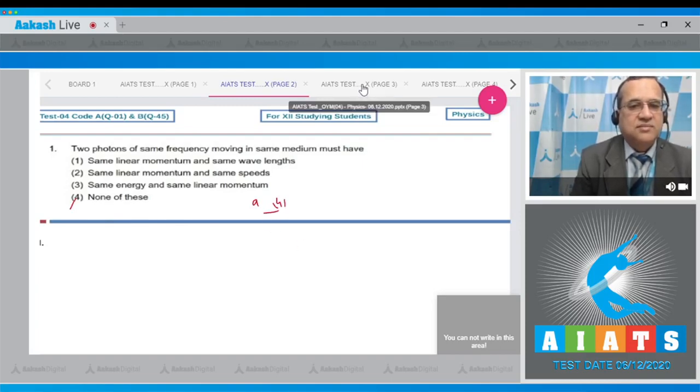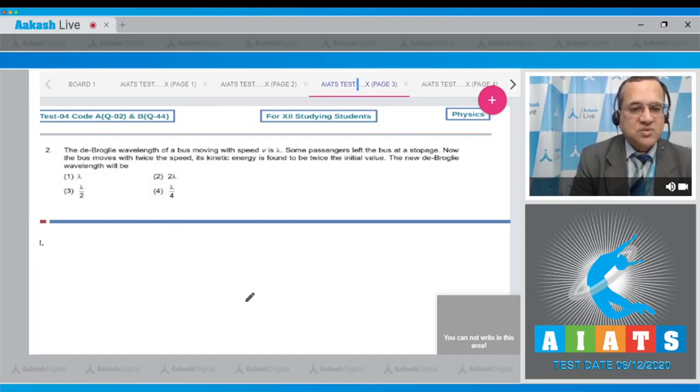The next question: The de Broglie wavelength of a bus moving with speed v is lambda. Some passengers left the bus at a stoppage. Now the bus moves with twice the speed. Its kinetic energy is found to be twice the initial value. The new de Broglie wavelength will be?